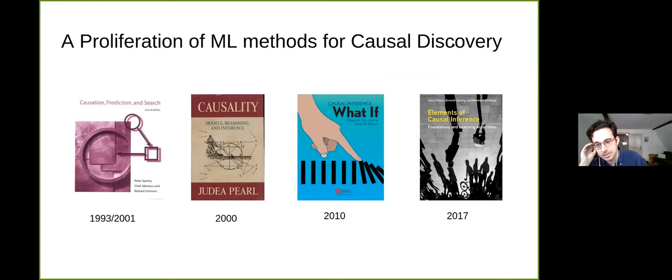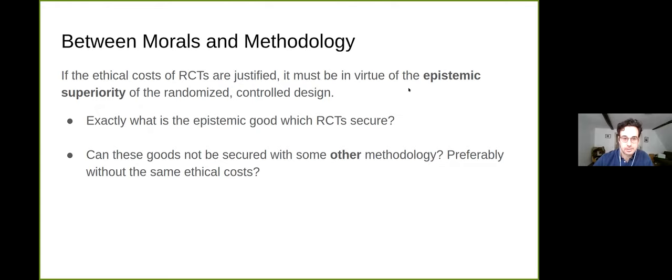The RCT has been dominant for a while, but in the last 20 years or so, there has been a proliferation of works on causal discovery with a focus on non-experimental data, observational data. A lot of this work is interdisciplinary, coming from philosophy, computer science, machine learning, epidemiology, or economics. This proliferation of new work on causal discovery suggests that maybe we should revisit the RCT.